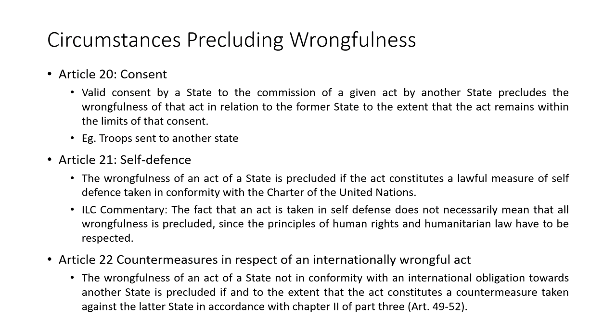Article 22 allows for countermeasures in respect of an internationally wrongful act. It says the wrongfulness of an act of a state not in conformity with an international obligation towards another state is precluded if and to the extent that the act constitutes a countermeasure taken against the latter state in accordance with Chapter 2 of Part 3 — Articles 49 to 52. Any countermeasure taken must be proportional in nature and only aimed at allowing the other state to stop the wrongful acts committed against a particular state. A state B can take a countermeasure of similar nature which must be proportional and which must not go beyond what has been committed by state A — the objective of the countermeasure should only be to allow the other state to return to the same position as before and stop the wrongful action.